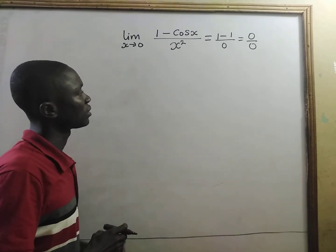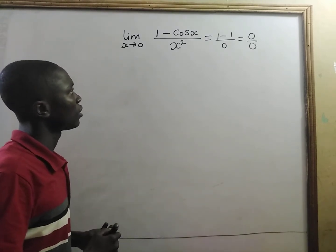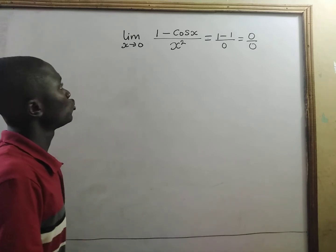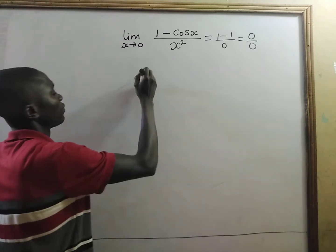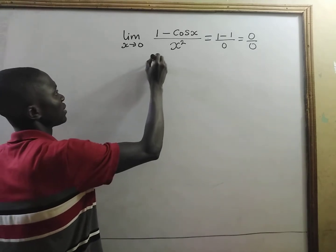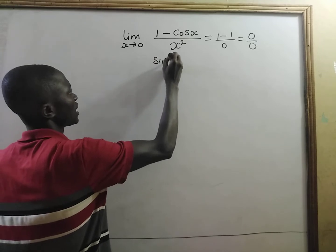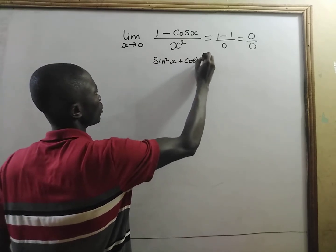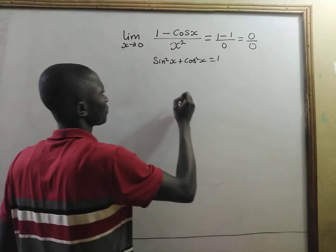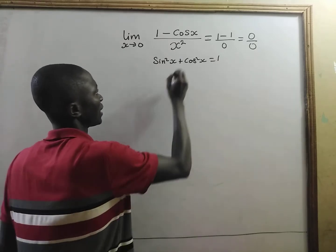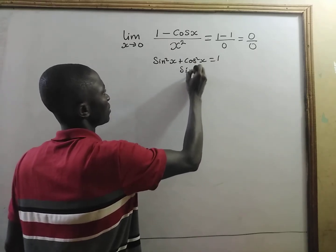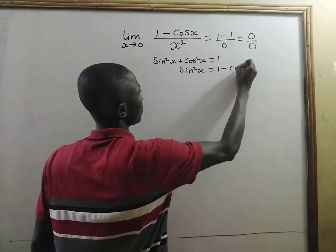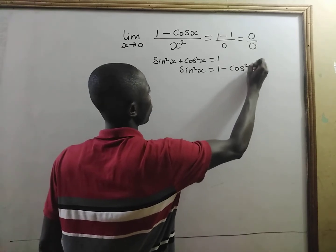Now, how do we do this one? Since we are not going to use L'Hôpital's rule, we know that sine squared of x plus cosine squared of x is equal to 1. And that means sine squared of x is equal to 1 minus cosine squared of x.